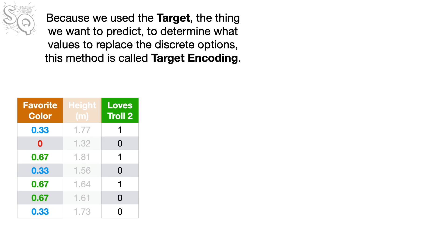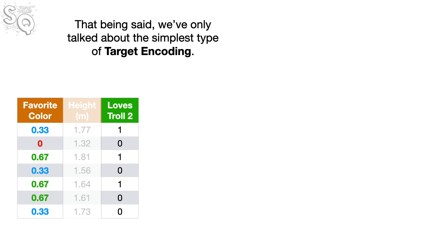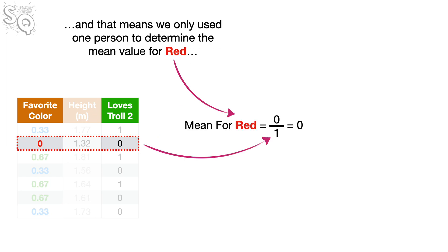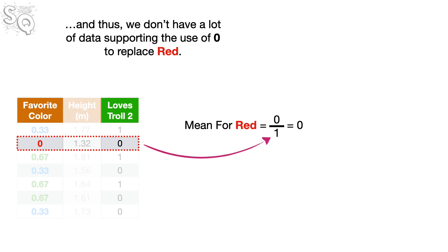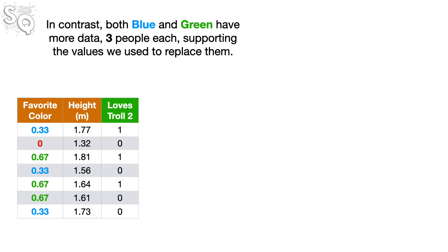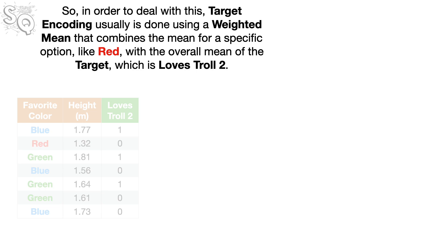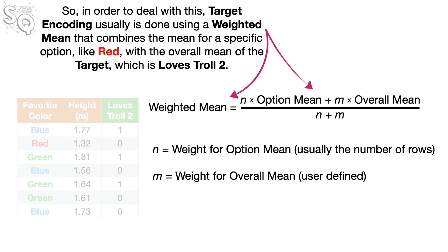Because we use the target — the thing we want to predict — to determine what values to replace the discrete options, this method is called target encoding. That being said, we've only talked about the simplest type of target encoding. A more commonly used version deals with the fact that we only had one person who liked the color red. And that means we only used one person to determine the mean value for red. Thus, we don't have a lot of data supporting the use of 0 to replace red. In contrast, both blue and green have more data — three people each — supporting the values we used to replace them. Because less data supports the value we replaced red with, we have less confidence that we replaced red with the best value than we have for blue and green.